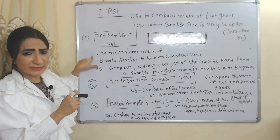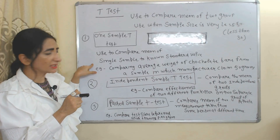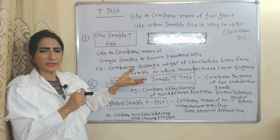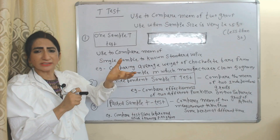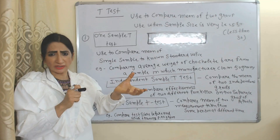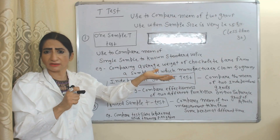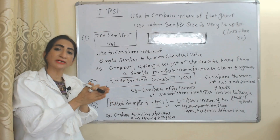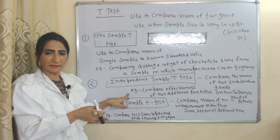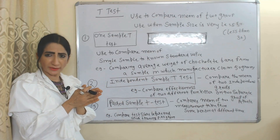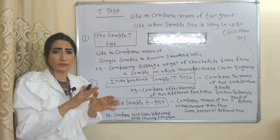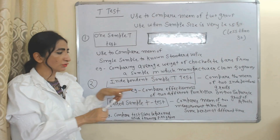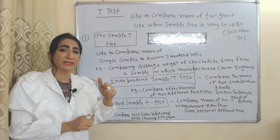One-sample T test: we use it to compare the mean of a single sample to a known standard value — for example, compare the average weight of a chocolate bar from a sample of a manufacturer who claims the weight is 50 grams. Independent sample T test: used to compare the mean of two independent groups — for example, compare the effectiveness of two different painkillers on two separate groups of patients.